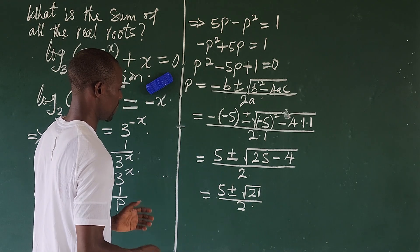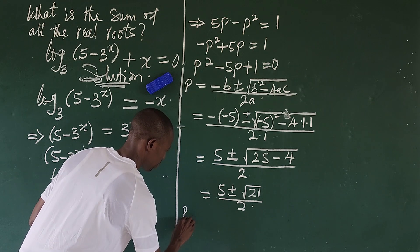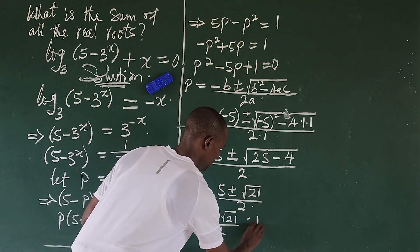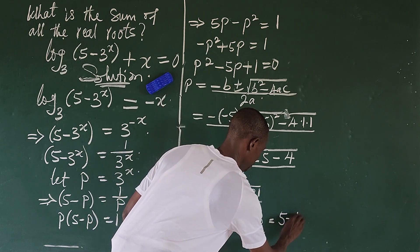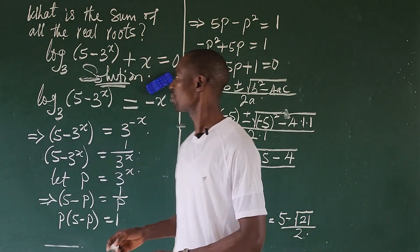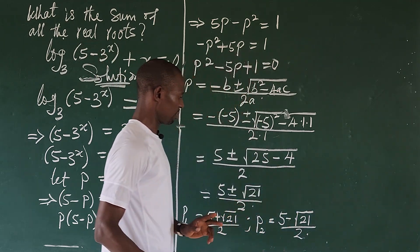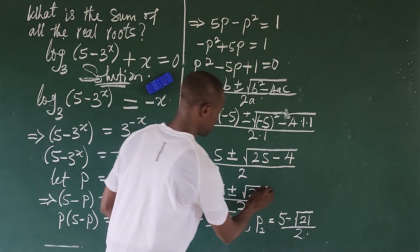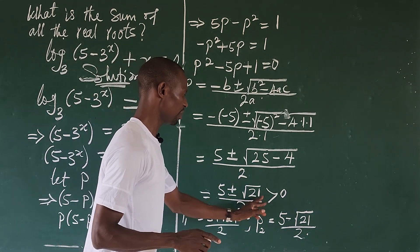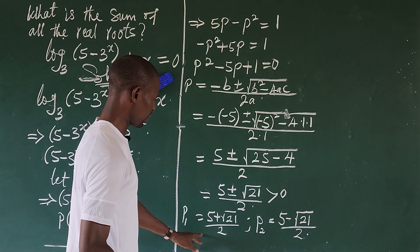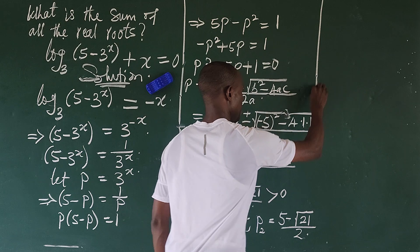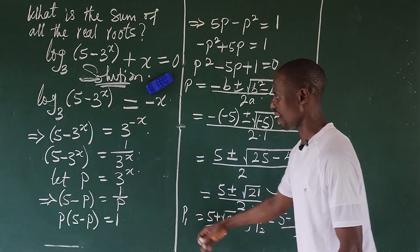So we have two answers: p1 and p2. p1 is equal to 5 plus the square root of 21, all over 2. And p2 is equal to 5 minus the square root of 21, all over 2. Now because we have been asked to look for only the real roots, automatically our answer must be greater than 0. If it is less than 0, that will give us imaginary roots. So our determinant must be greater than 0. Both cases are greater than 0, so we now solve for each case to get our real value of x.